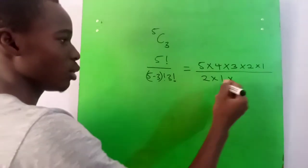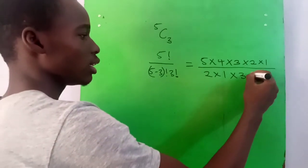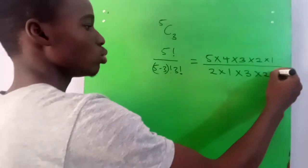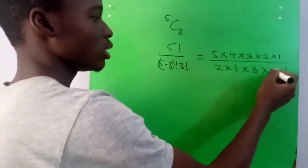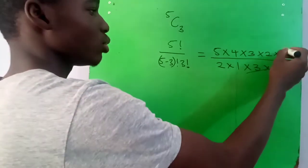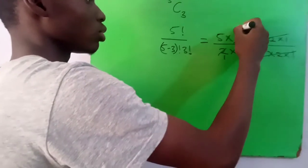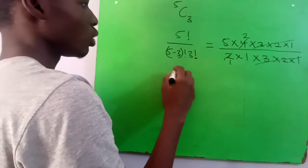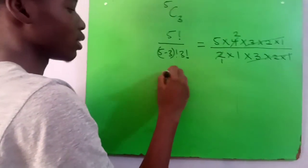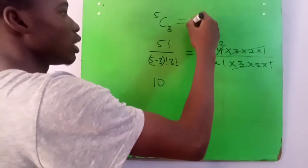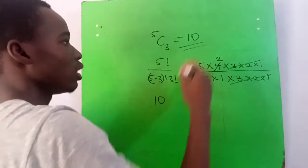3 factorial will be 3 times 2 times 1. So we have 3, 2, 1 and we have 3, 2, 1, so you cancel out 2 here, 1, 2 here. 5 times 2 is equal to 10. So 5 combination 3 is 10.